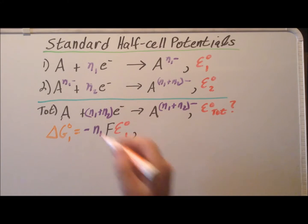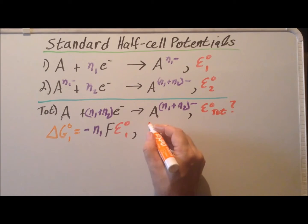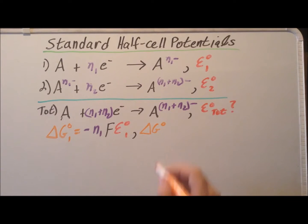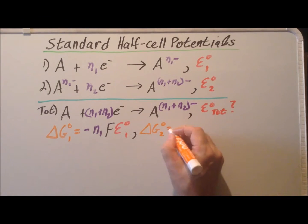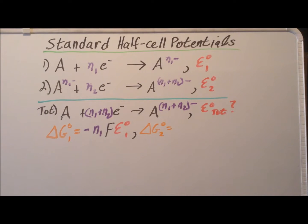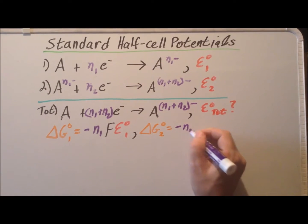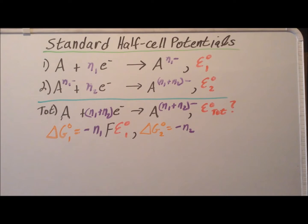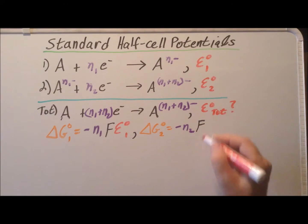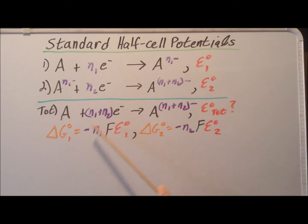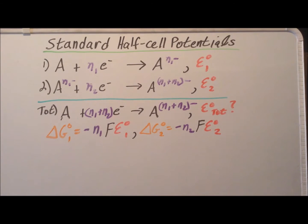Similarly, we apply the same relationship for the second reaction: delta G naught sub 2 is equal to minus N sub 2 times F times E naught sub 2. So we have now converted each standard reduction potential to a standard Gibbs free energy. The reason we want to do that is that standard Gibbs free energies are additive in the way that we need.